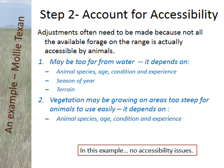Vegetation can also be inaccessible if it's growing on terrain that's too steep — and again this depends on the animal, age, condition, and experience. Some animals are really able to use rough country, while others aren't, depending on species, breed, and experience. In the example with Molly Texan, this is a thousand-acre ranch, so it's fairly small and the whole area is accessible to animals. We're not going to make any changes to the amount of forage available.